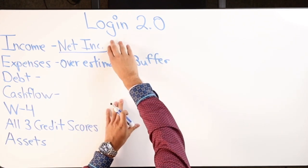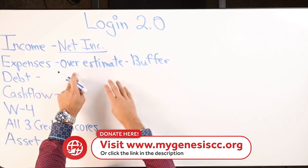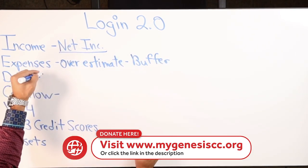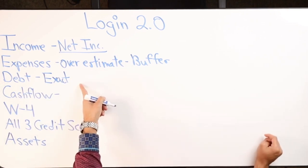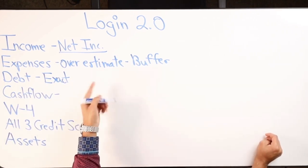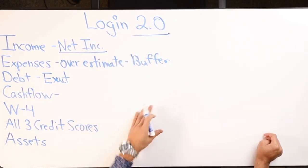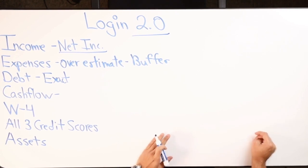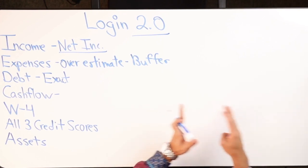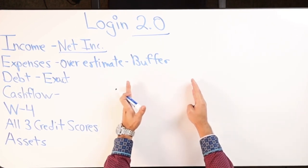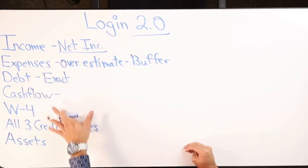So we're conservatively getting our net income on a monthly basis, we're getting our monthly expenses, but we're overestimating, and then we need to know the exact total number you have in debt. And what I want you to do is list out each debt. So when you come to Login 2.0, March 20th, Friday evening, be ready. I want you to bring a nice sheet, clean sheet of paper, notes for note-taking, and then I want you to have a sheet of paper or two that's fully filled out, fully laid out, going over these things right here.